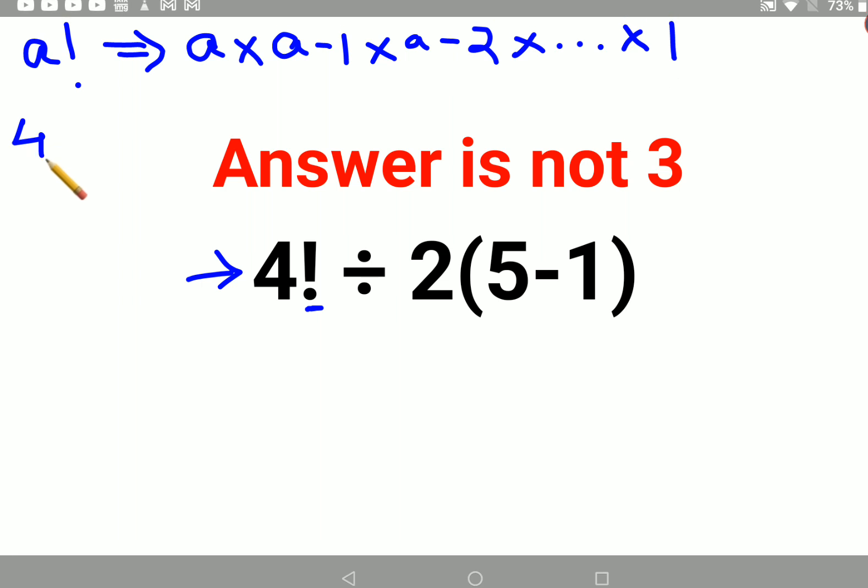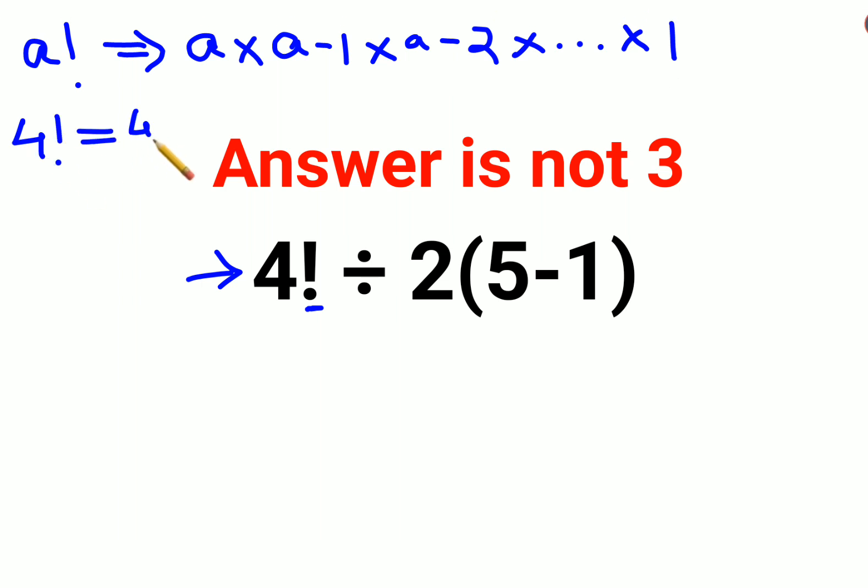So basically 4 factorial would be 4 into 3 into 2 into 1. That value gets you 24. Now let's try to write this question again. So we have 24 divided by 2 and we have 5 minus 1. Please understand here now you have come to a question which involves the use of BODMAS or PEMDAS.